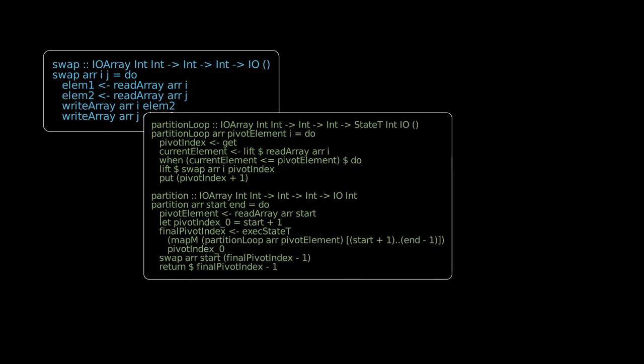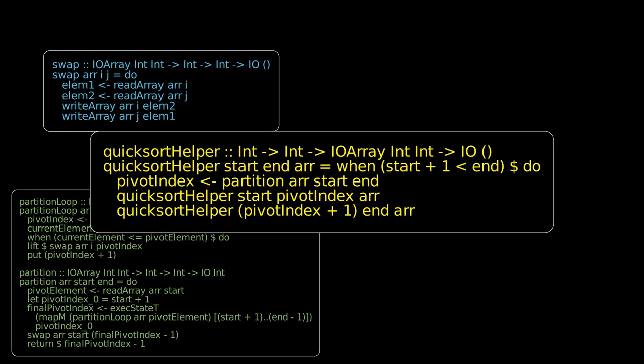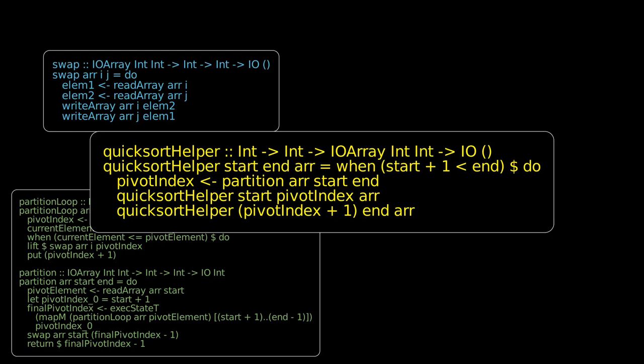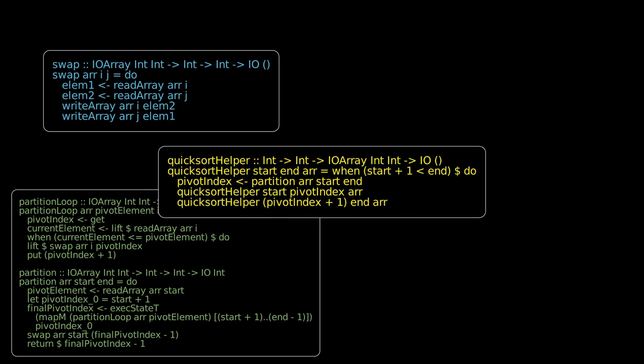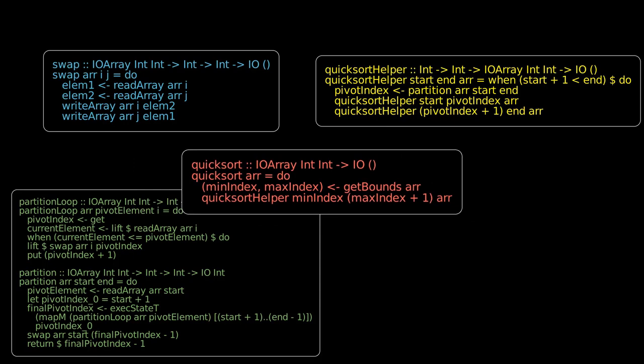And then we have our quick sort helper. Our partition function is monadic, so we just call that, get our pivot index, and then make our recursive calls. And finally, our main wrapper function gets the bounds of our array and then calls the helper. And that completes our algorithm.